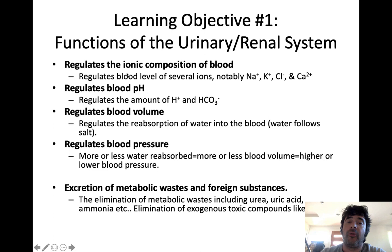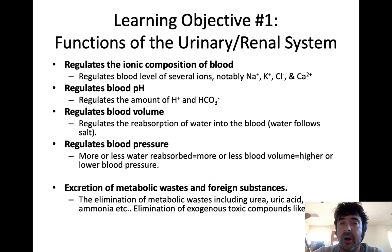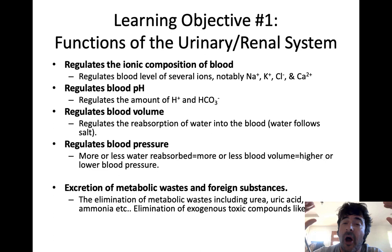First, it regulates the ionic composition of blood — blood levels of ions, specifically sodium, potassium, chloride, calcium, magnesium, etc. As we learned in our nervous system and skeletal muscle sections, ions are really important with respect to different physiological processes like firing an action potential, which is how neurons communicate or how skeletal muscle initiates contraction. The concentration of these electrolytes in the blood must be monitored carefully, and the system that monitors and adjusts electrolyte composition is the urinary or renal system.